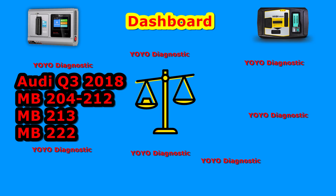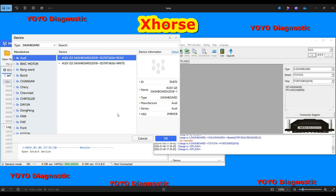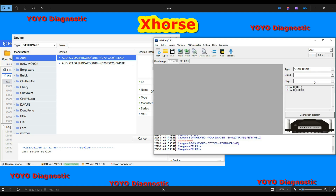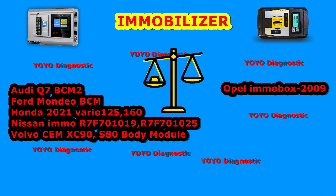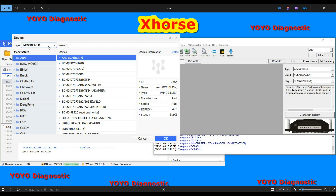The next difference is on the dashboard menu — there are differences on Audi and Mercedes, which you can see from the picture on screen. Moving to the immobilizer menu, we also have differences between the two programmers on Audi and Honda, as shown in the picture. From the other side, the VVDI Prog has a really great function for those working with Opel: the immobox function.